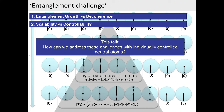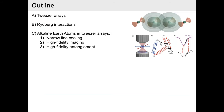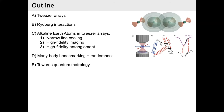The outline is roughly as follows: I'll first introduce our workhorse — tweezer arrays to trap and control atoms — then talk about Rydberg interactions and basic physics seen using them. I'll switch to our work at Caltech on alkaline earth atoms in tweezer arrays, covering how we cool, image, and achieve high-fidelity entanglement. Then I'll have a section on many-body benchmarking and randomness — some of our most recent results — and if time permits, two or three slides on ideas toward quantum metrology.